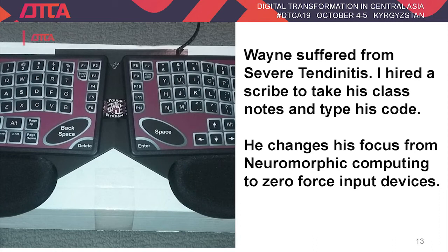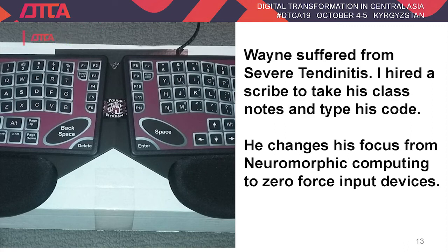Apple worked on this for about a year. They decided they were going to use this technology. In order to make sure that no one else got access to the technology, they bought Fingerworks, which included all the patents that Wayne and John Elias had written. They bought Fingerworks and then Wayne and John left Delaware. They moved out to Cupertino, California and began working on the top secret iPhone project.